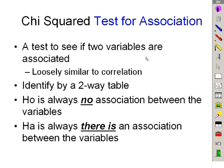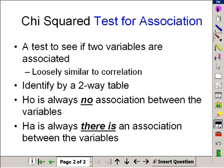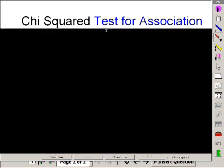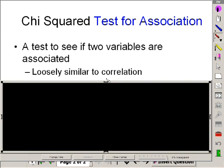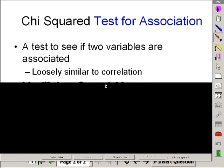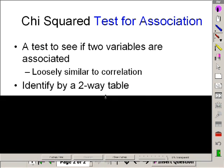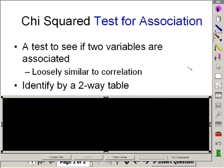Now, before we get into that, here's what I want you to see right now. For a chi-squared test for association, it's to see if two variables are associated. A little bit like correlation, but even easier. It's a test to see if two variables are associated. I always identify by a two-way table. And that right there is extremely important, this two-way table.